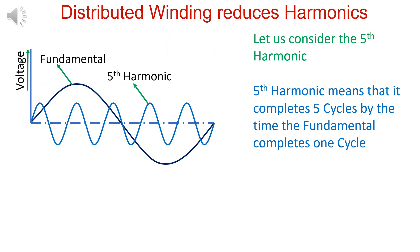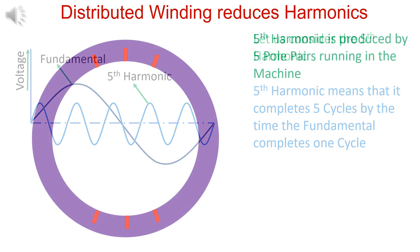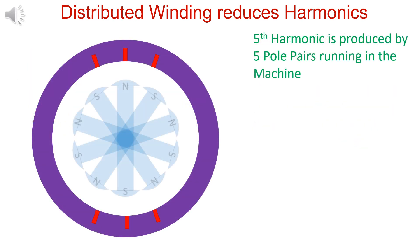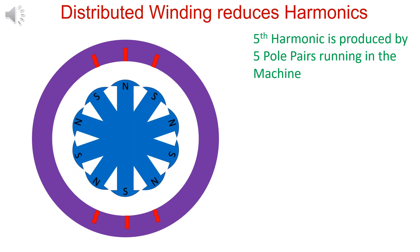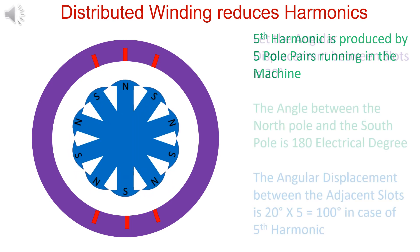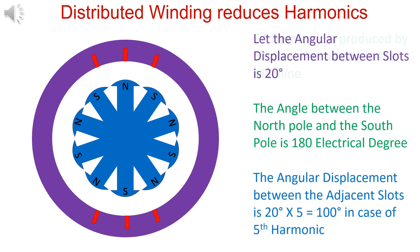Let us take an example of fifth harmonic. It completes five cycles by the time fundamental completes one cycle. Fifth harmonic is produced by five-fold pairs. With respect to five-fold pairs, angular displacement between coils is five times that of the fundamental, that is 20 into 5 equal to 100 electrical degrees.